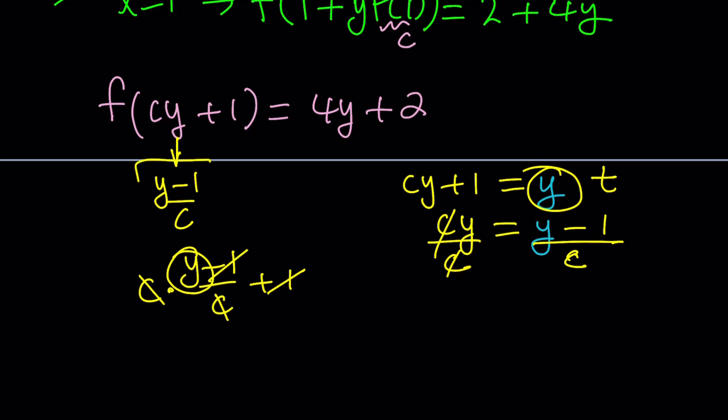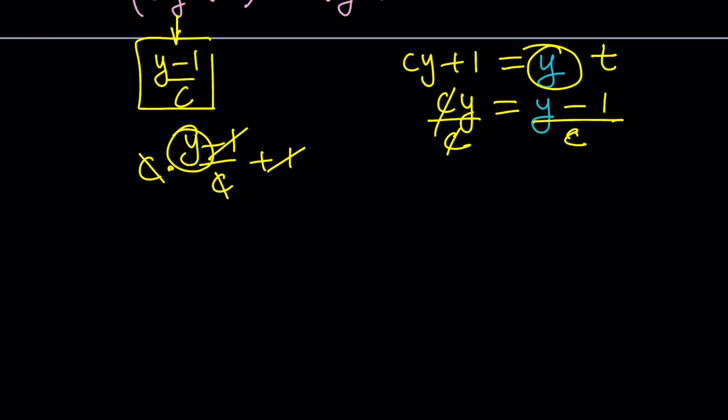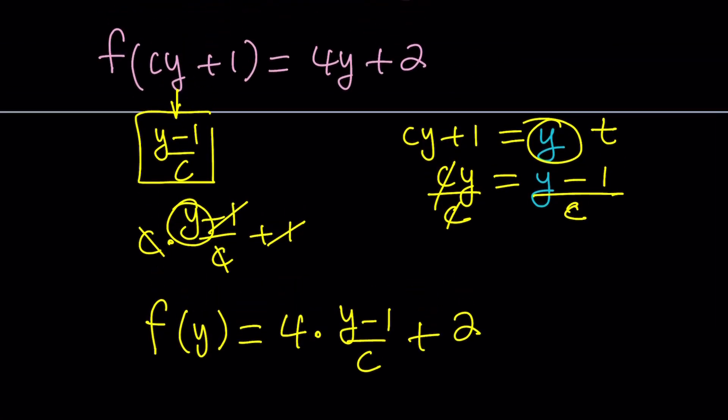So, I'm replacing y with (y-1)/c on both sides. On the left, I'm getting f(y). On the right, 4 times y will be 4 times (y-1)/c plus 2. Remember that this expression is replacing y. Make sense? Great.